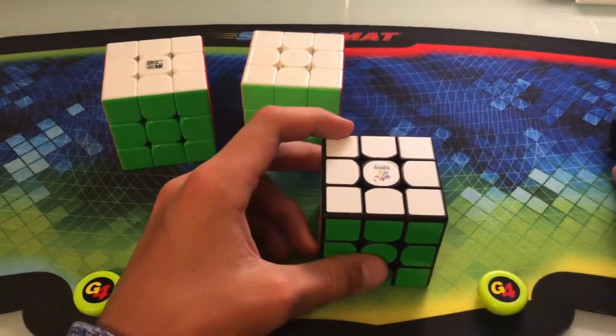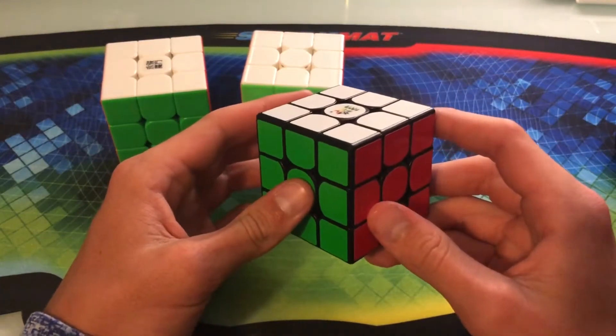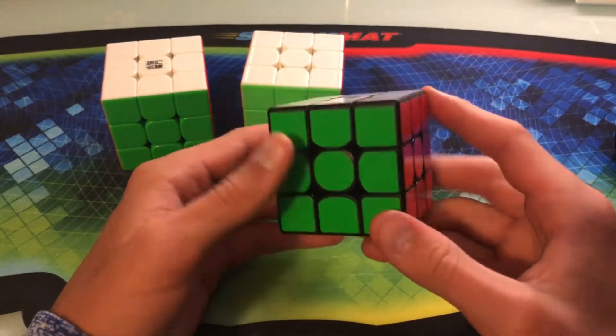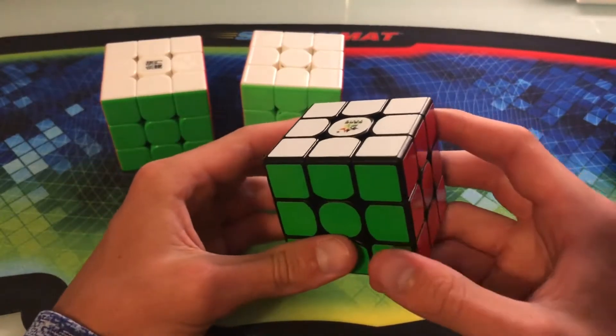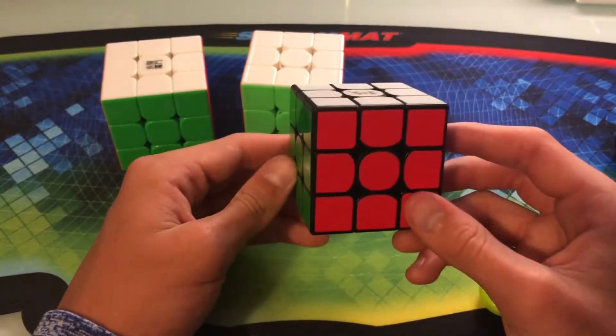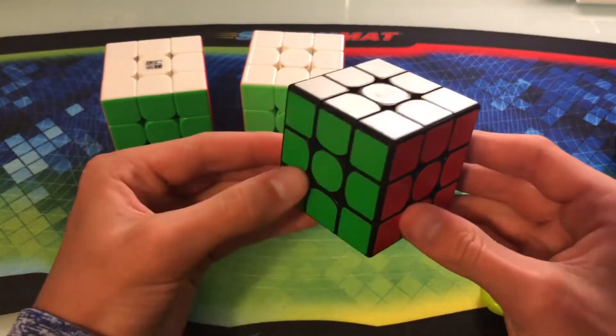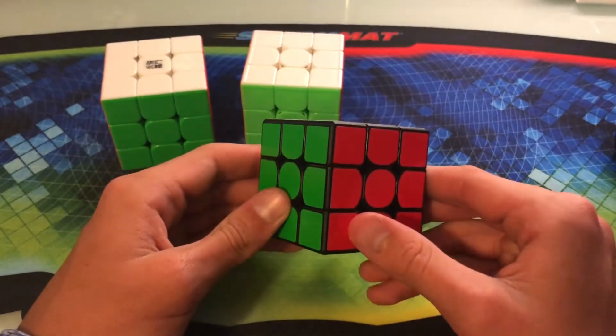And then in last place was the Yushin Little Magic 3x3. And sort of as expected, this one didn't have magnets, and it's a pretty cheap puzzle realistically. At $5, you can't expect a whole lot. Its average of five came in at 21.37 seconds, which actually basically breaks a record for my worst average of five for like the last month or so.